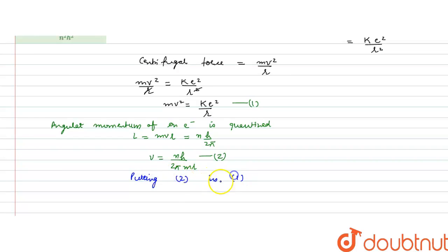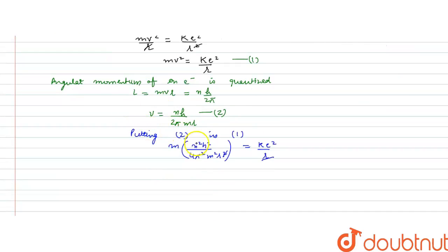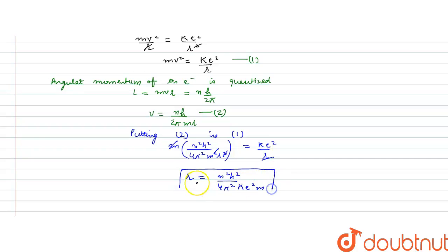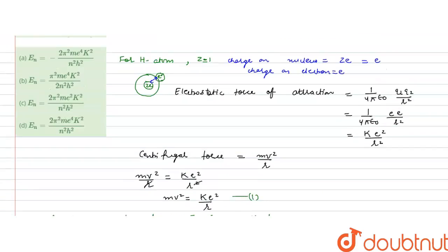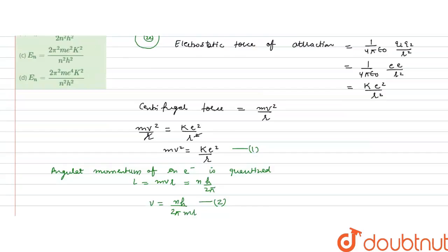Putting equation 2 into equation 1: m × (nh/2πmr)² = ke²/r, which gives n²h²/(4π²m²r²) × m = ke²/r. The r² and m simplify, and solving for r gives: r = n²h²/(4π²ke²m). This is the radius of the orbit in which the electron is revolving.